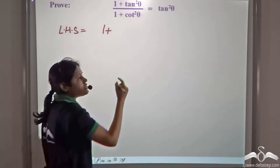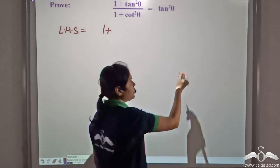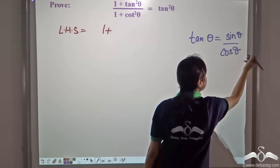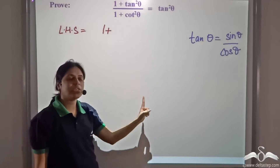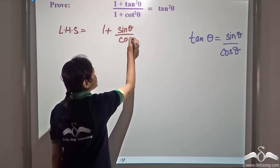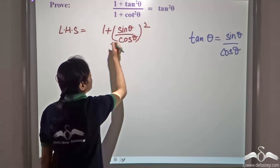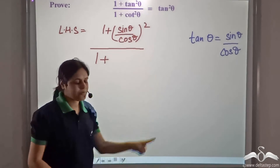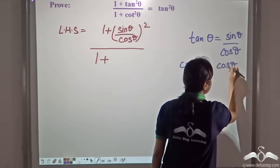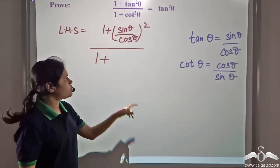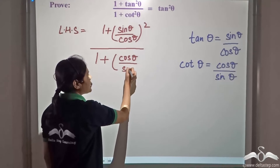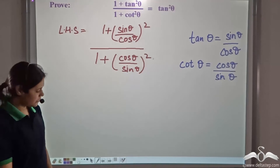So, 1 + tan²θ. We know that tanθ = sinθ / cosθ, so tan²θ = sin²θ / cos²θ. This gives us 1 + (sinθ / cosθ)² in the numerator. We know that cotθ = cosθ / sinθ, so in the denominator we have 1 + (cosθ / sinθ)².